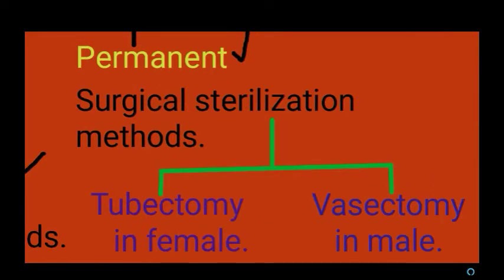Under permanent methods, it includes surgical sterilization methods. There are two types of surgical sterilization method: tubectomy, which is done in females, and vasectomy, done in males.